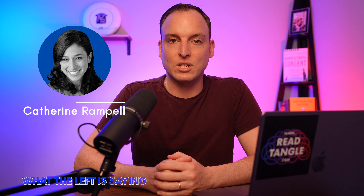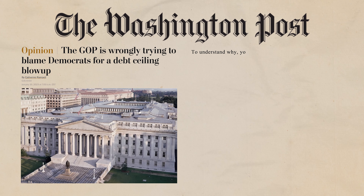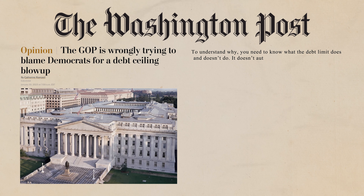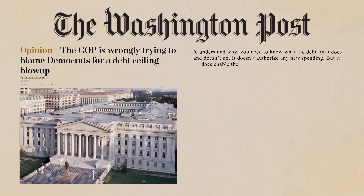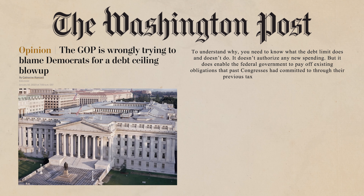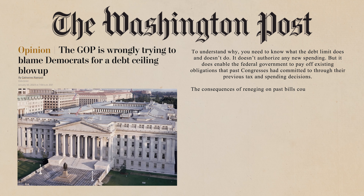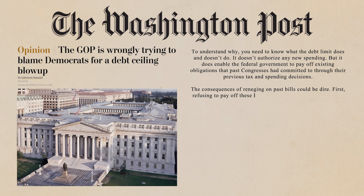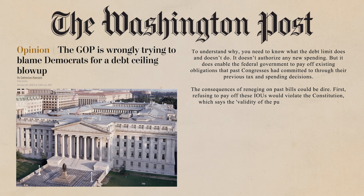Now let's talk about what the left is saying. Many Democrats are criticizing Republicans for tying anything to the debt ceiling — they argue that it is a risky game to play. In the Washington Post, Catherine Rampell said defaulting on the debt limit would be catastrophic. To understand why, you need to know what the debt limit does and doesn't do: it doesn't authorize any new spending, but it does enable the federal government to pay off existing obligations that past Congresses had committed to through their previous tax and spending decisions.